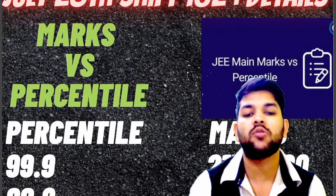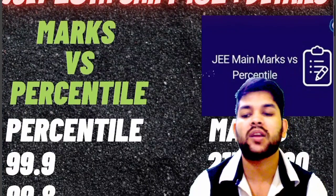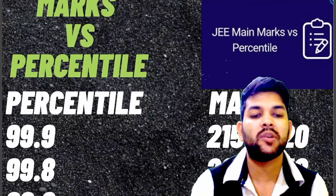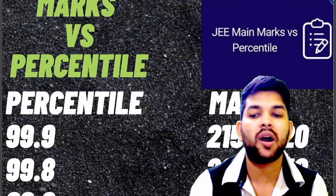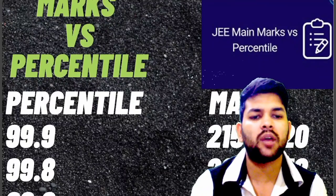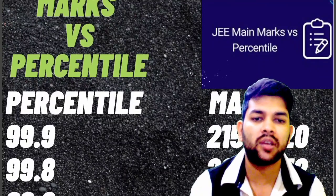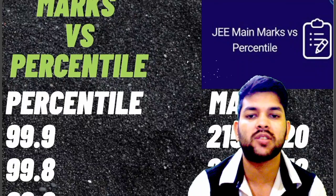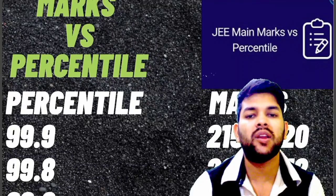Here is the complete marks versus percentile information: for 99.9 percentile you will be getting around 215 to 220 marks, and for 99.8 percentile it is 207 to 212 marks. One more thing — the number of students appearing in this shift is low, which will have a huge effect on marks versus percentile.